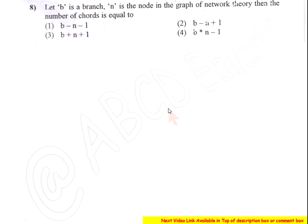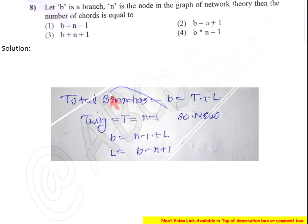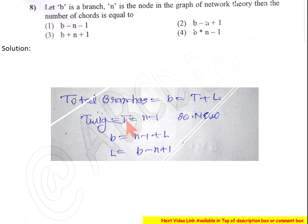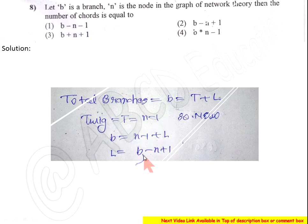Let B be the number of branches and N be the number of nodes in a network graph. The number of chords (links) equals B − N + 1. We know that total branches B equals the tree branches (T) plus links (L), and T equals N − 1. Therefore L = B − N + 1. So the answer is option 2.